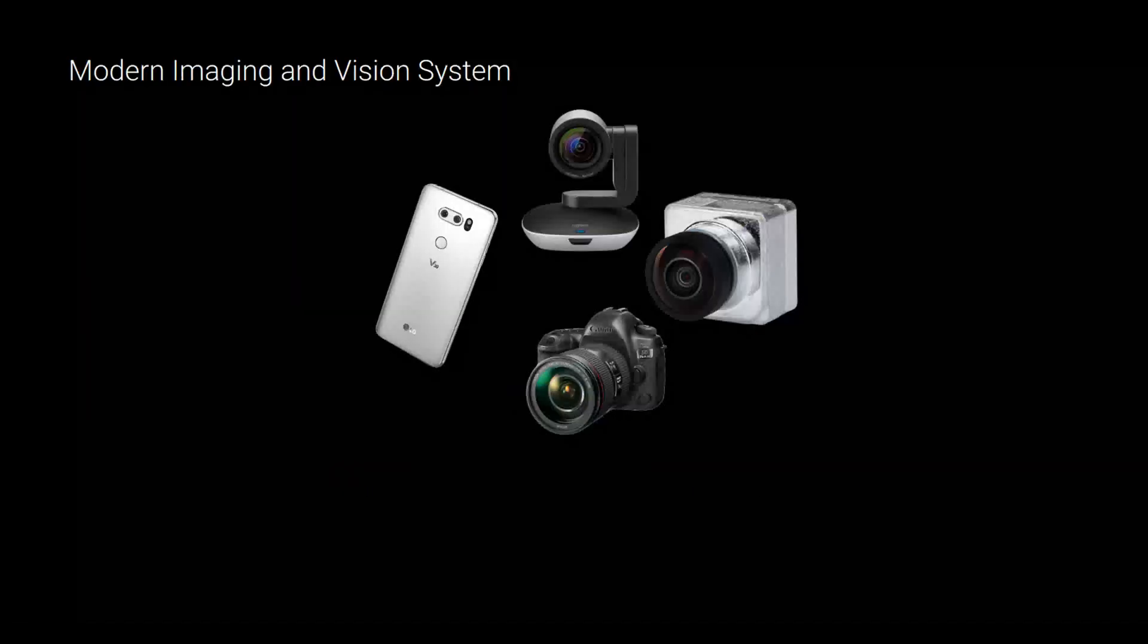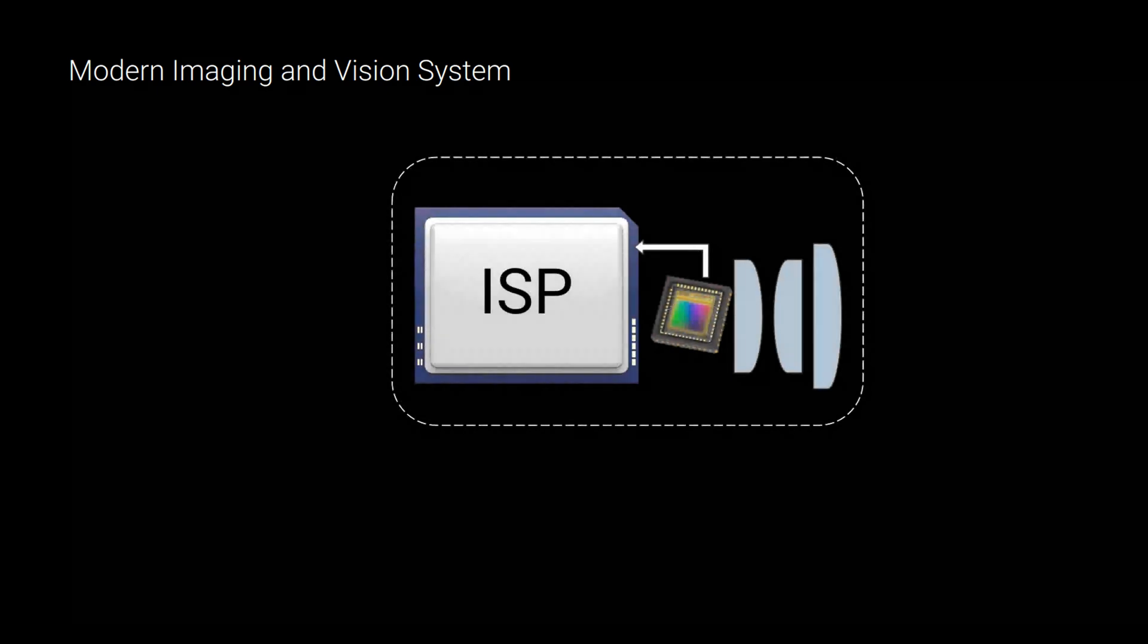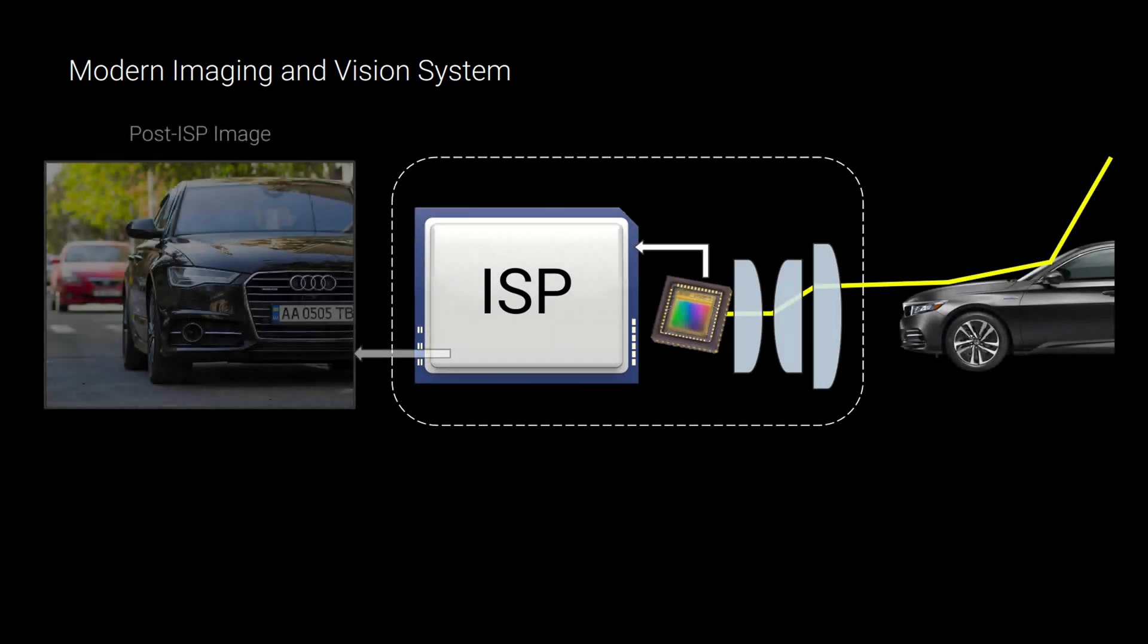Cameras play an important role in current computer vision systems. They contain image signal processing pipelines, so-called ISPs, that transform noisy raw signals into a noiseless and colorful image.